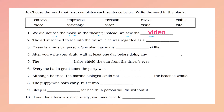Number two: 'The artist seemed to see into the future. She was regarded as a visionary.' Visionary — from 'vision,' from the root vi. Number three: 'Casey is a musical person. She also has many visual skills.' Visual skills.